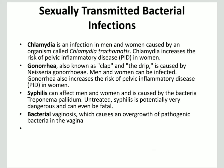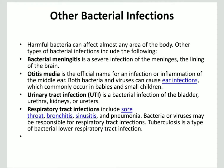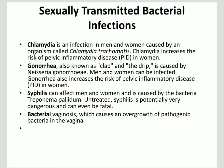Next, coming to the sexually transmitted bacterial infections. Chlamydia is an infection in men and women caused by the organism called Chlamydia trachomatis. Chlamydia increases the risk of pelvic inflammatory disease in women. Gonorrhea, also known as clap and drip, is caused by Neisseria gonorrhoeae. Men and women can be infected, and gonorrhea also increases the risk of pelvic inflammatory disease.